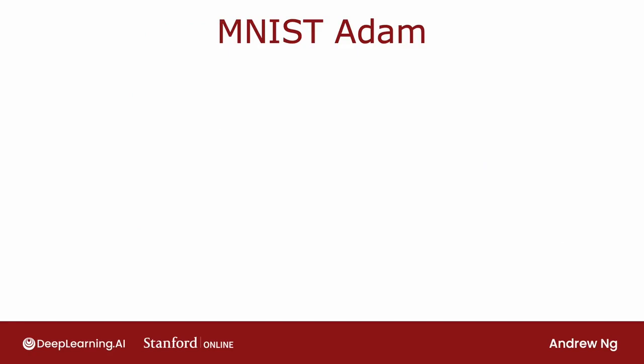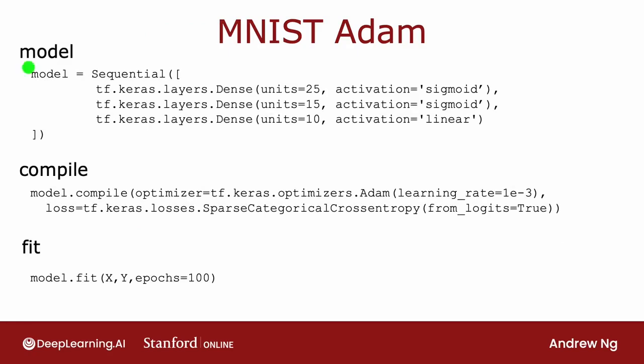But in code, this is how you would implement it. The model is exactly the same as before. And the way you compile the model is very similar to what we had before, except that we now add one extra argument to the compile function, which is that we specify that the optimizer you want to use is tf.keras.optimizers.Adam optimizer.